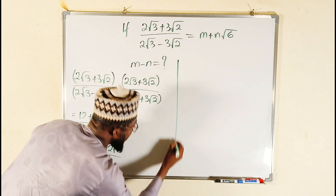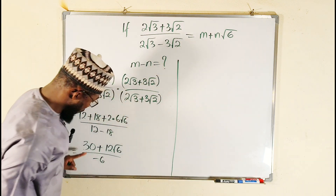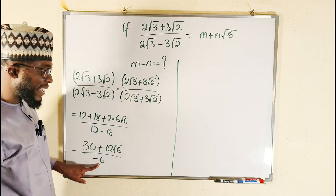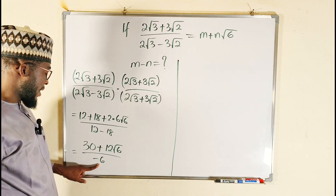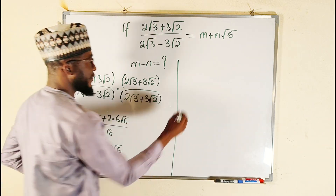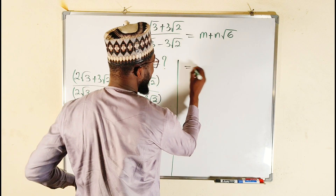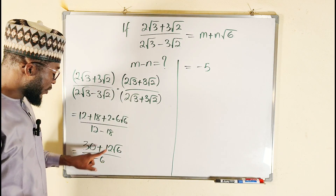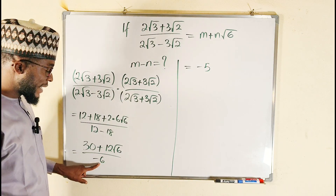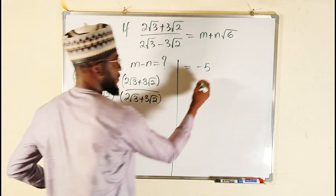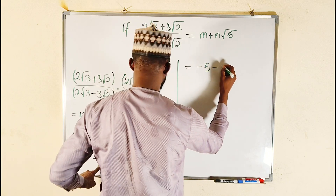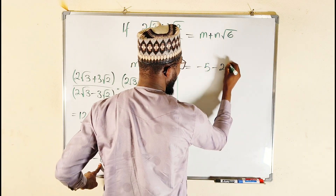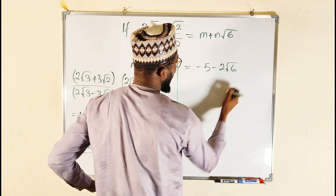We distribute negative 6 over the numerator. 30 divided by negative 6 gives us negative 5. Then 12 divided by negative 6 gives us negative 2. So we have negative 2√6.